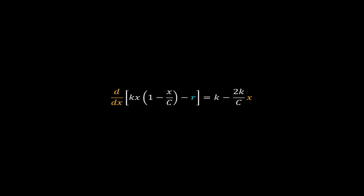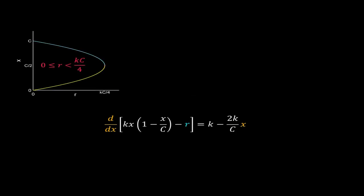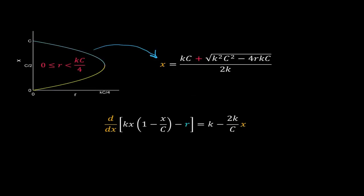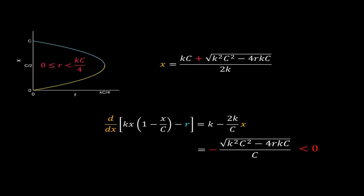The derivative of our function is equal to k minus (2k/c) times x. Now I will plug different steady state values of x into this derivative to ascertain the stability. For the higher steady state, x equal to (kc plus the square root of k²c² minus 4rkc) divided by 2k, the value of the derivative at that steady state is minus the square root of k²c² minus 4rkc, divided by c. This is negative, meaning the steady state along the upper blue line is stable.